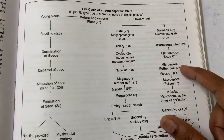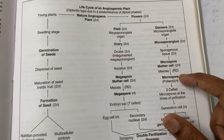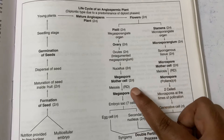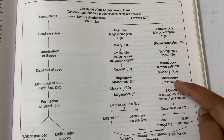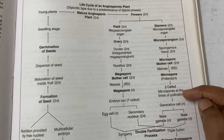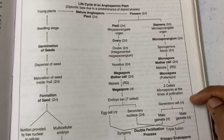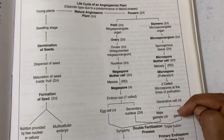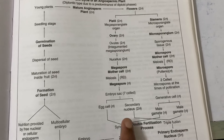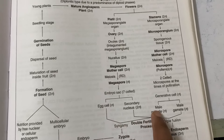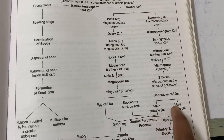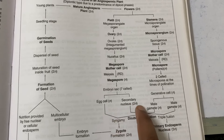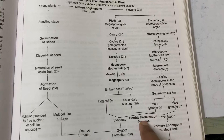The microspore mother cell also undergoes meiosis and creates microspores, which are the pollens. The pollens have two cells. At the time of pollination the microspore gives rise to a generative cell, and this generative cell divides into two male gametes. The egg cell fuses with one male gamete and the secondary nucleus fuses with the other male gamete. This fertilization happens two times, so we call it double fertilization.